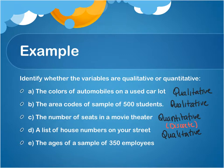The last one: the ages of a sample of 350 employees. This right here is ages — when you actually measure age, you're going to get a number back, and those actually measure you. So since they measure, this is a quantitative variable. Do they count or do they measure? They measure. And because they measure, you can apply a unit to age, such as years, days, or weeks. Because you can apply a unit to it, this is what we call a continuous variable.